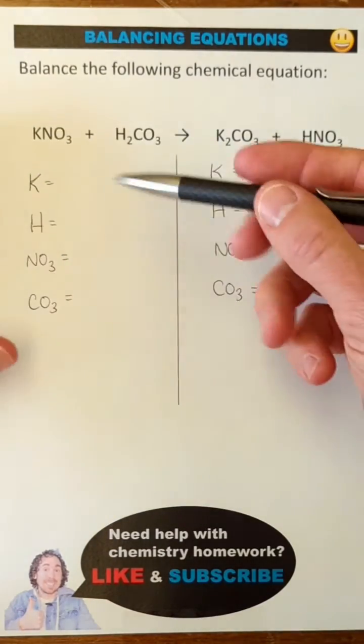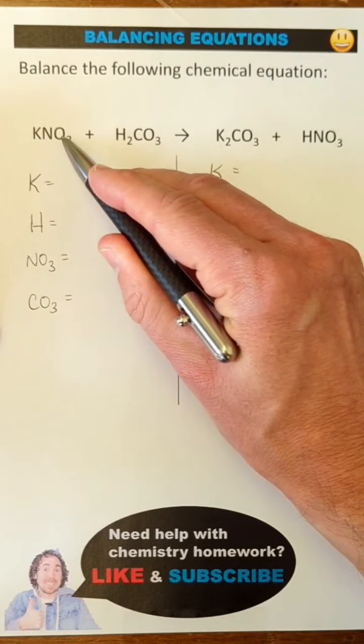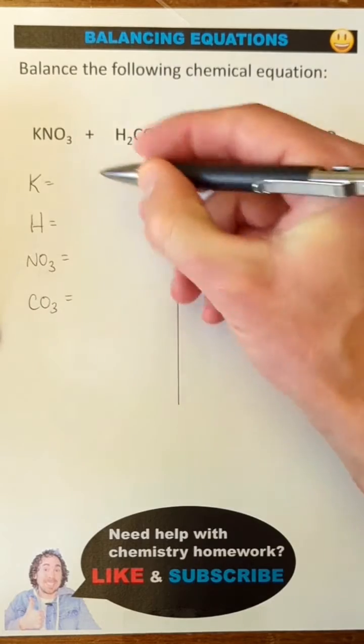To make it easier to balance, I like to first count the atoms on each side. When there's polyatomic ions involved, I like to keep them together when I count. So I'm going to keep nitrate and carbonate together as a group.